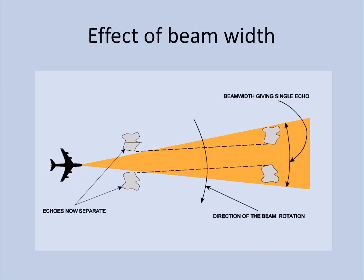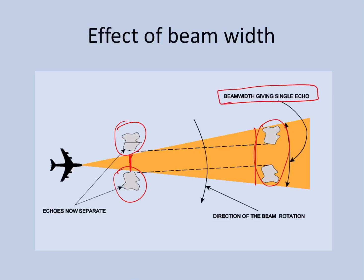This diagram clearly shows there are a couple of clouds close to the aircraft. The narrower the beam width, the better the resolution, meaning it is able to separate the two clouds distinctively. As the beam travels further, the beam width increases, and both clouds return as a single echo — coming back to the display as one cloud, whereas they are not. So the narrower the beam width, the better the target resolution.